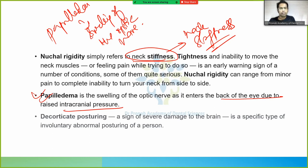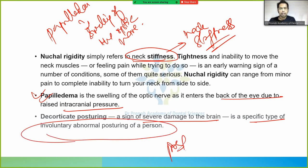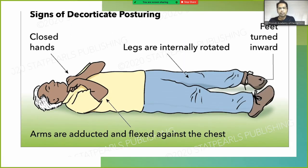Decorticate posturing is a severe sign of brain damage — a specific type of involuntary abnormal posturing. The signs include: closed hands, arms adducted and flexed against the chest, legs internally rotated, and feet turned inward. This abnormal postural position is called decorticate posturing.